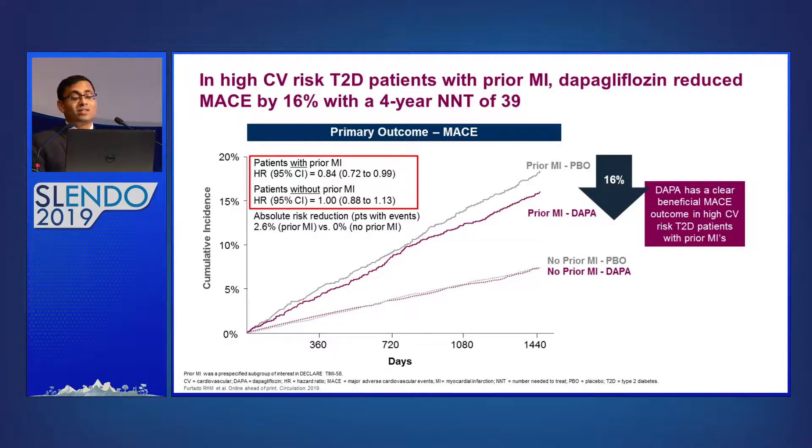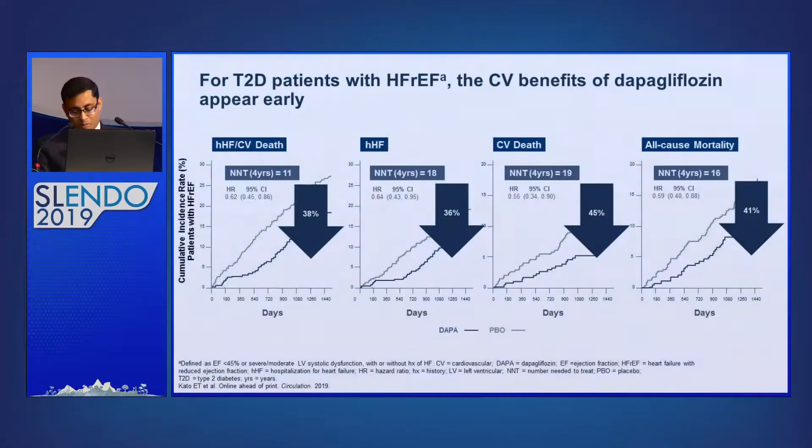Importantly, DECLARE also included patients with reduced ejection fraction and those with preserved ejection fraction — a strength of this trial. If you dissect the results for patients with prior hospitalization for heart failure, the number needed to treat to prevent another hospitalization for heart failure was only 11. The NNT to prevent the first episode of hospitalization for heart failure or death in patients with prior ACVD was also very favorable. Treating just 18 patients with dapagliflozin prevents one heart failure hospitalization; treating 19 prevents one cardiovascular death. Overall, there is around 38 to 41 percent reduction in all cardiovascular outcomes.